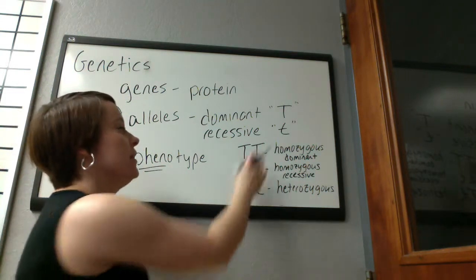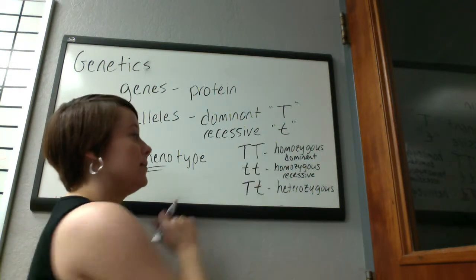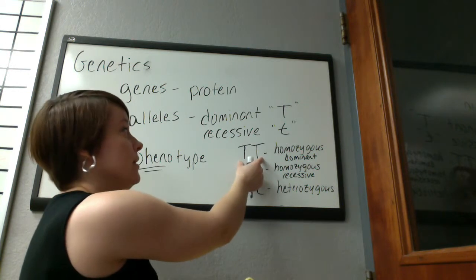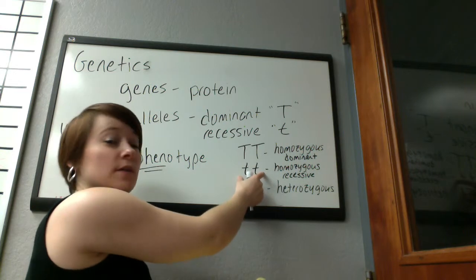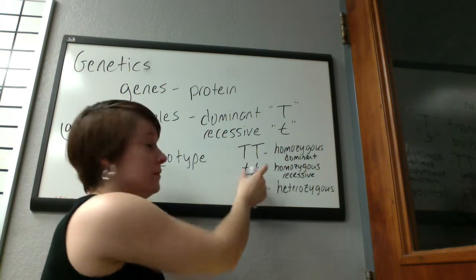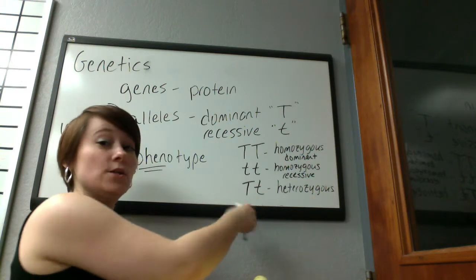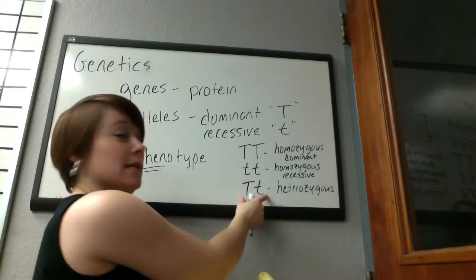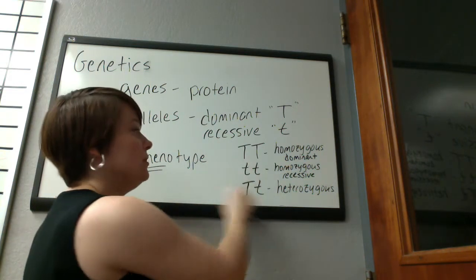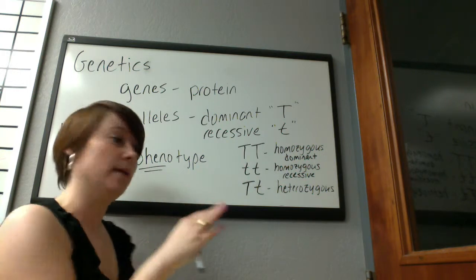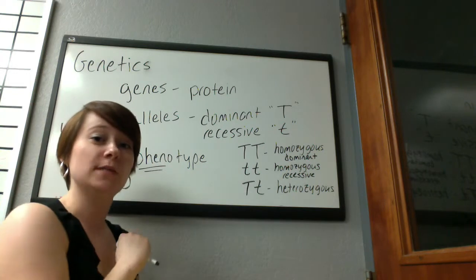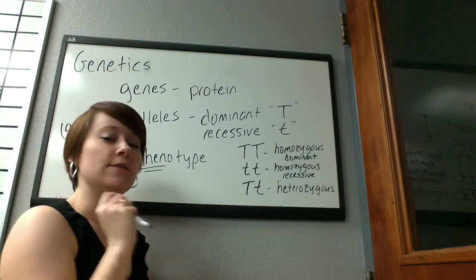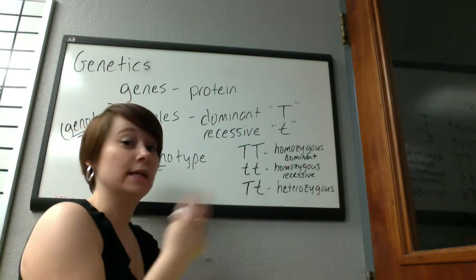Looking at genotypes versus phenotypes: the genotypes are the alleles, and the phenotypes are the appearance of those plants. The homozygous dominant would be a tall pea plant; the homozygous recessive would be a short pea plant. The heterozygous plant would also be tall, because the dominant allele masks the recessive allele. So if you see a tall plant, it could have two different genotypes. But if you see a short plant, you know it has to be homozygous recessive — that's the only way to have a short plant.